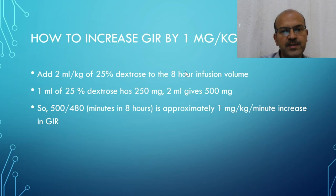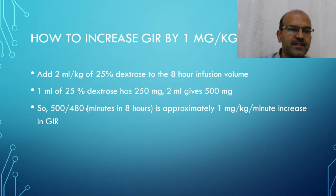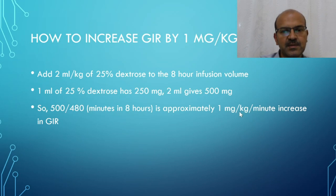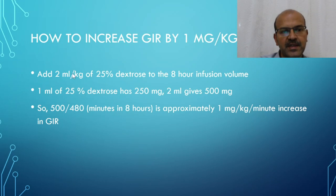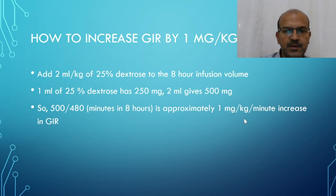There are 480 minutes in 8 hours, so 500 mg ÷ 480 ≈ 1 mg/kg/min increase in GIR. Because we use 2 ml per kilogram, the calculation is weight-adjusted, and the GIR increases by approximately 1 mg/kg/min. If your unit uses 24-hour volumes, adjust proportionately.